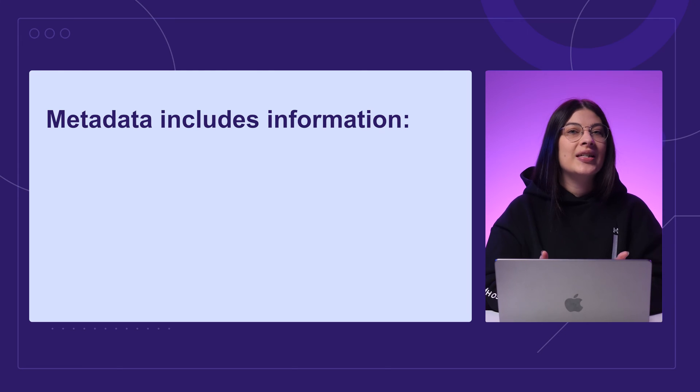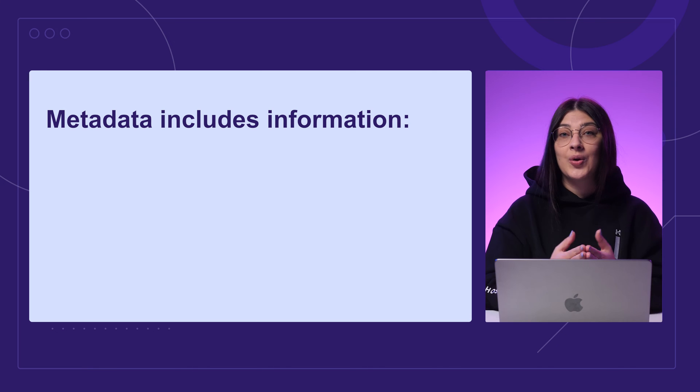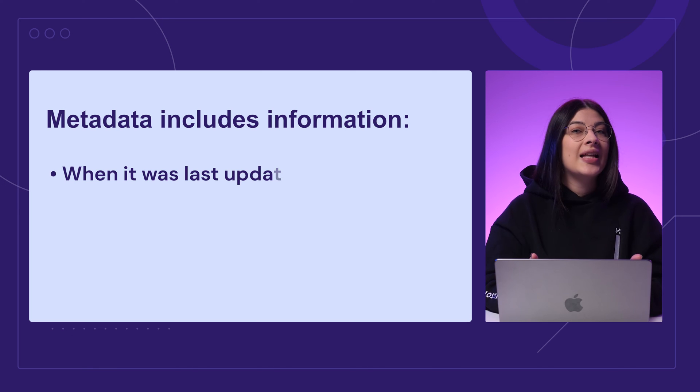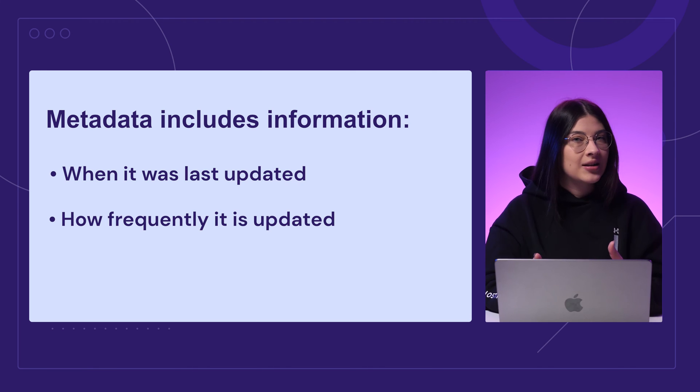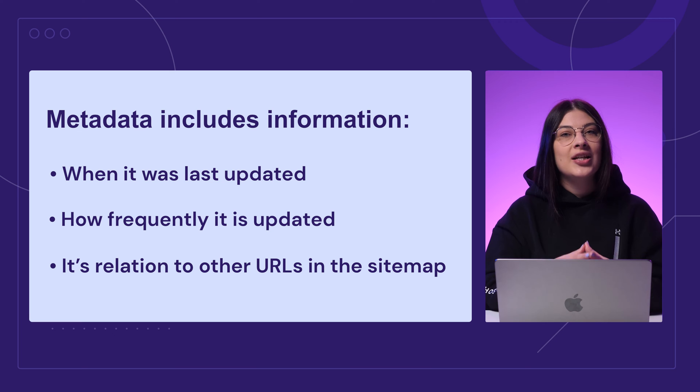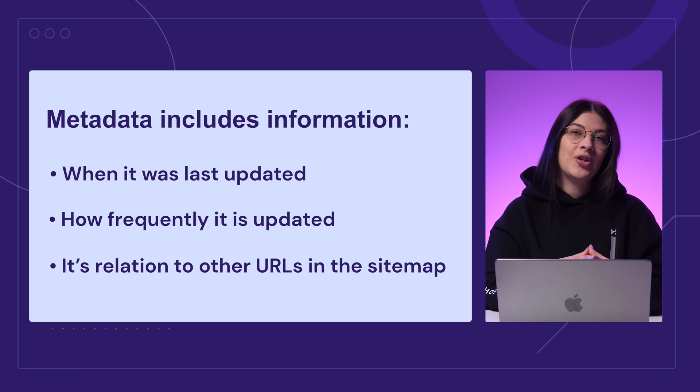An XML sitemap functions to record information about each URL on your website along with additional context and metadata. The metadata includes important information regarding URLs, such as when it was last updated, how frequently it is updated, and its relation to other URLs in the sitemap.